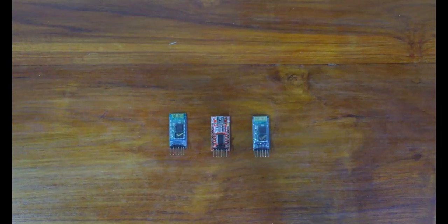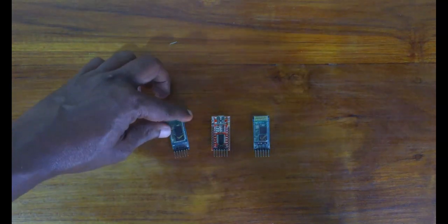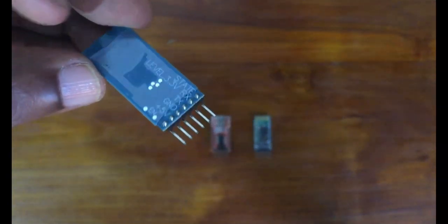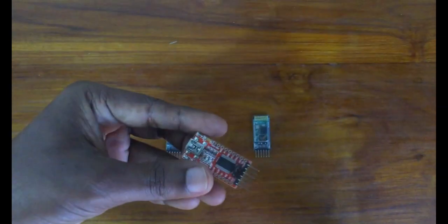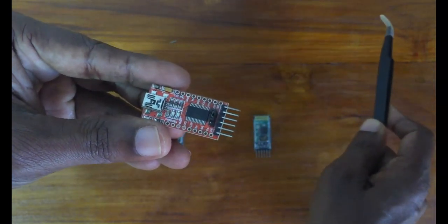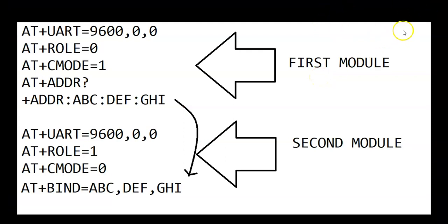We need to use AT commands to configure these two modules to work as master and slave. I'm going to use an FTDI adapter to program it. I have made a separate video — it's available here — to program the Bluetooth module with AT commands. We have to configure the Bluetooth module with 9600 baud rate for both of them. The first module: role is 0, C mode is 1, and we take the address and bind it to the next one. For the next one: role is 1, C mode is 0.